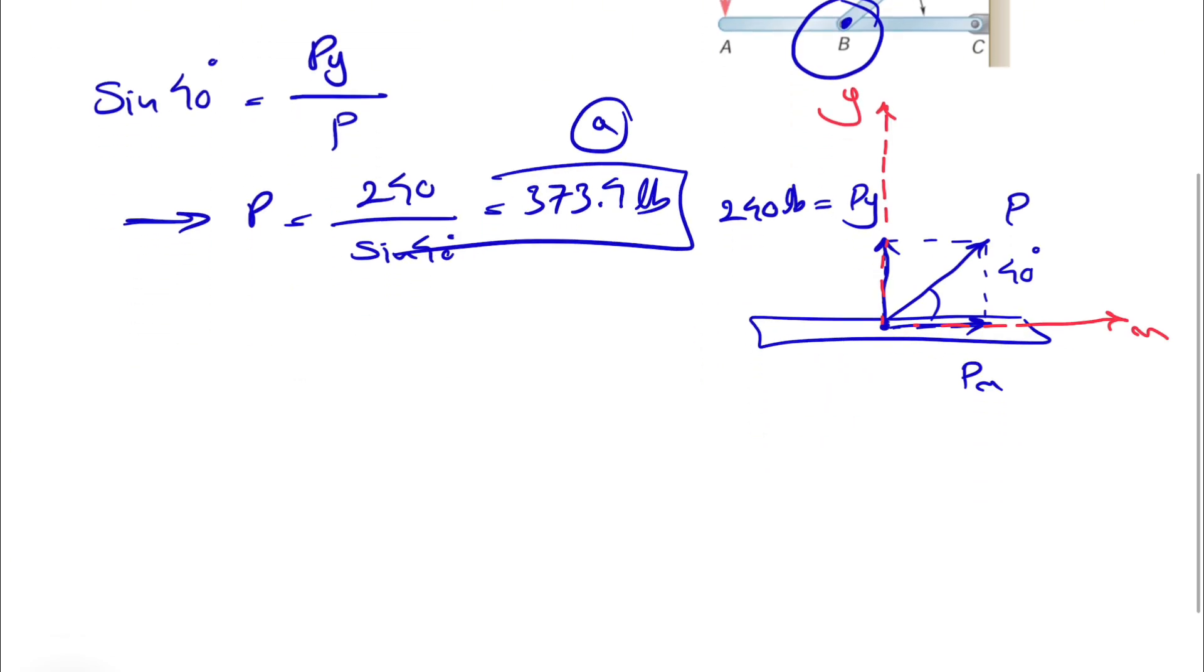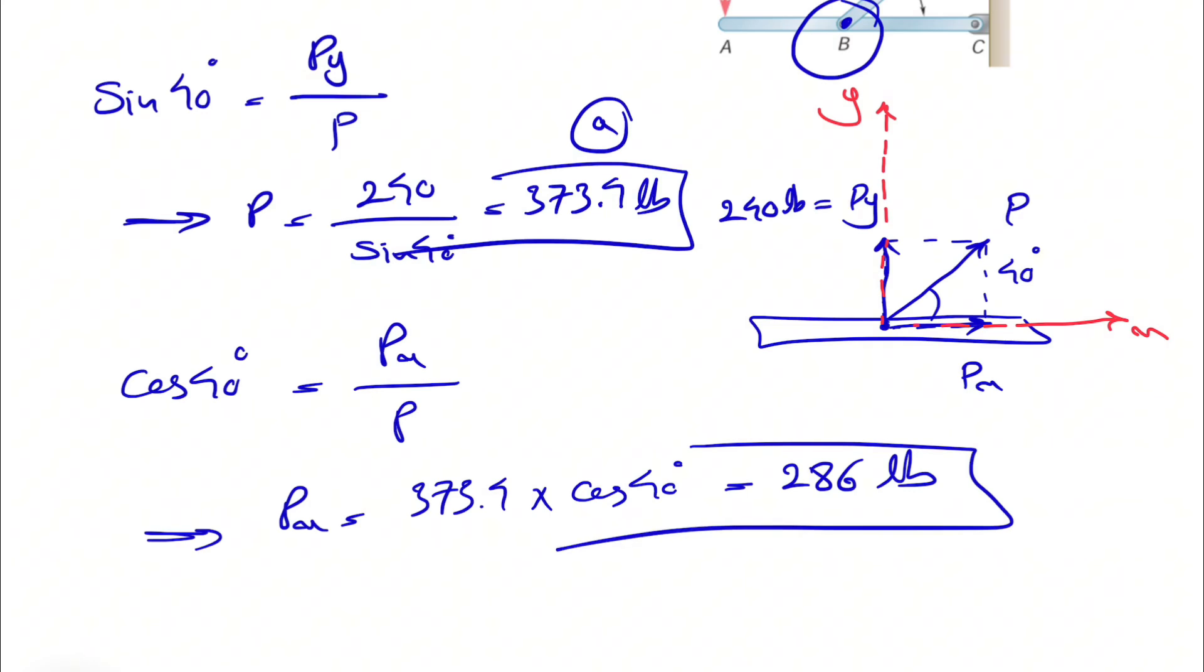And in the B part, we can go with the cosine of 40 degrees. And if we go with that, we'll have this time the adjacent or PX over P. We already found P. So our PX will be P, which is 373.4 times cosine of 40 degrees. And that's going to be 286 pounds. And that would be the answer for the B part of the question.